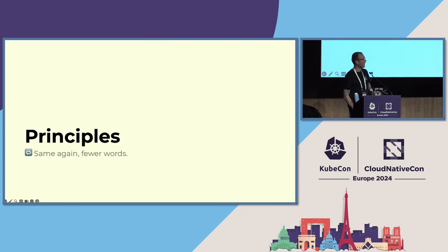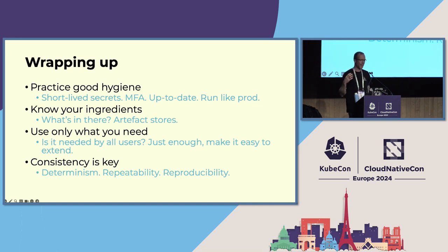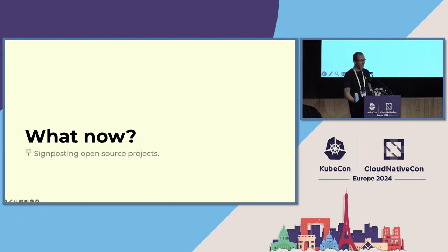To summarize the things I've just covered: when doing software production, practice good hygiene around infrastructure, secrets, and development tools; know what you're including in your software, have it at hand, and try to use as little as possible — only what you need; and ensure you have consistent processes. Those are the fundamental principles necessary to be aware of for producing a secure software supply chain.